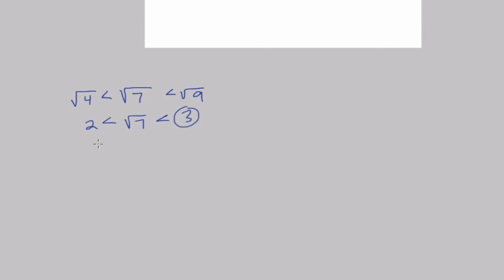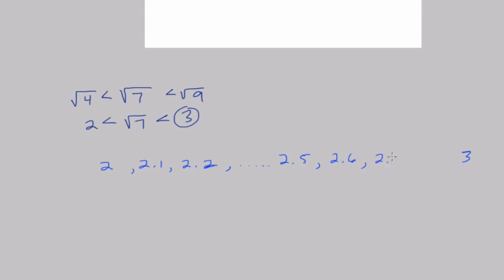The decimals between two and three go 2.1, 2.2, and so on, reaching 2.5 as the halfway point. We know the square root of seven is larger than 2.5 because seven is two from nine and three from four — so it's a little bit larger than the halfway point, meaning it falls between about 2.6 and 2.7. We can check those values to find the best approximation.